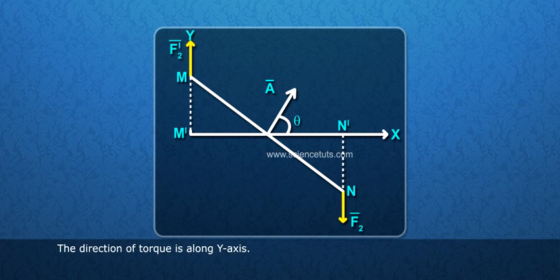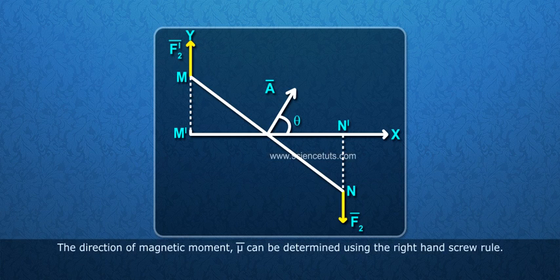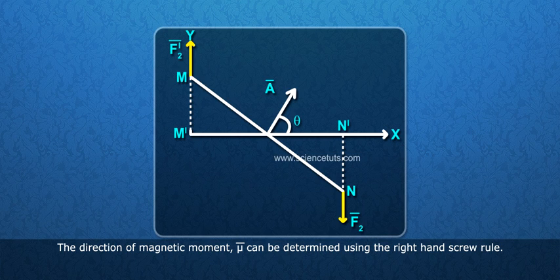The direction of torque is along Y axis. The direction of magnetic moment mu bar can be determined using the right-hand screw rule.